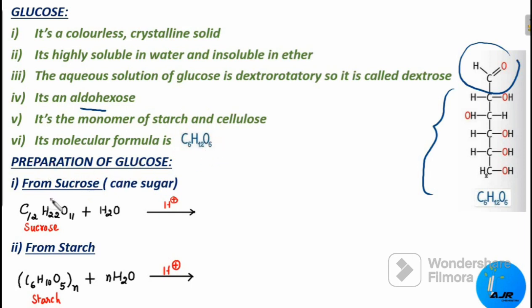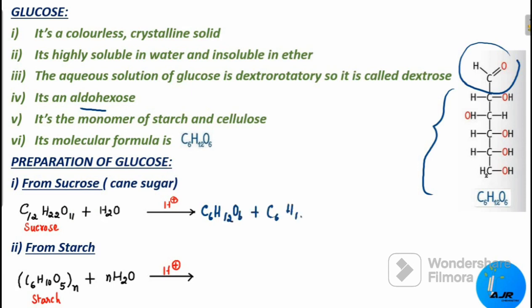Glucose is prepared from sucrose, that is cane sugar. When an alcoholic solution of sucrose is boiled with either dilute hydrochloric acid or sulfuric acid, it undergoes hydrolysis to form glucose and fructose in equal amounts — both having the formula C6H12O6. On cooling, glucose, being less soluble than fructose, separates out.